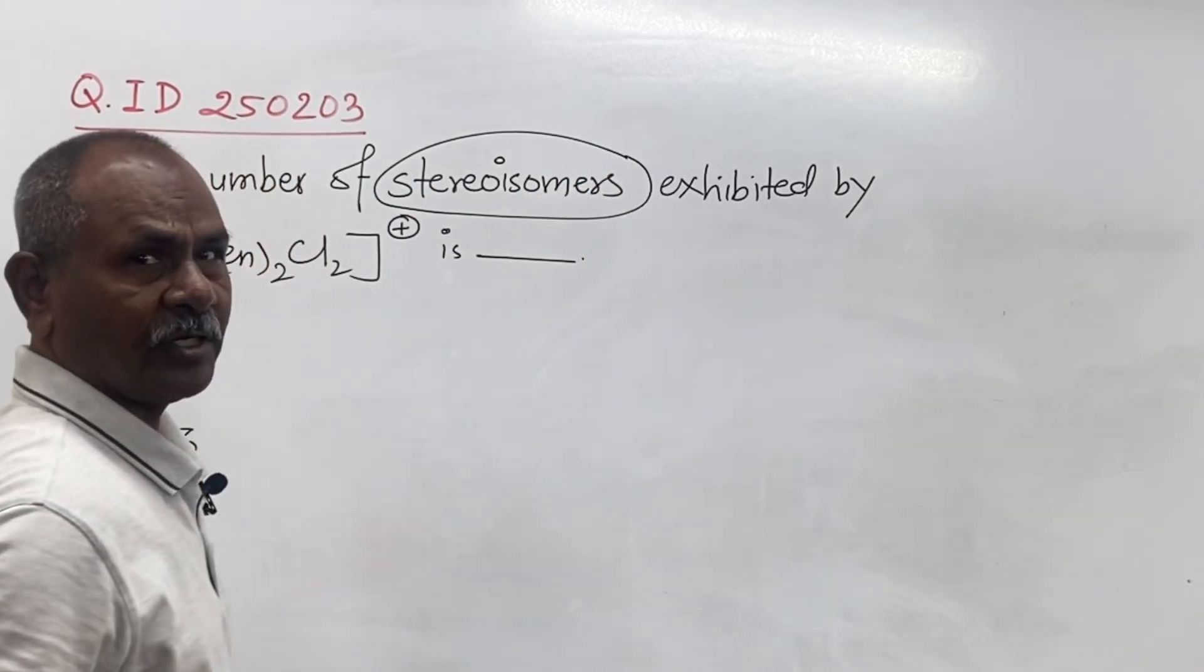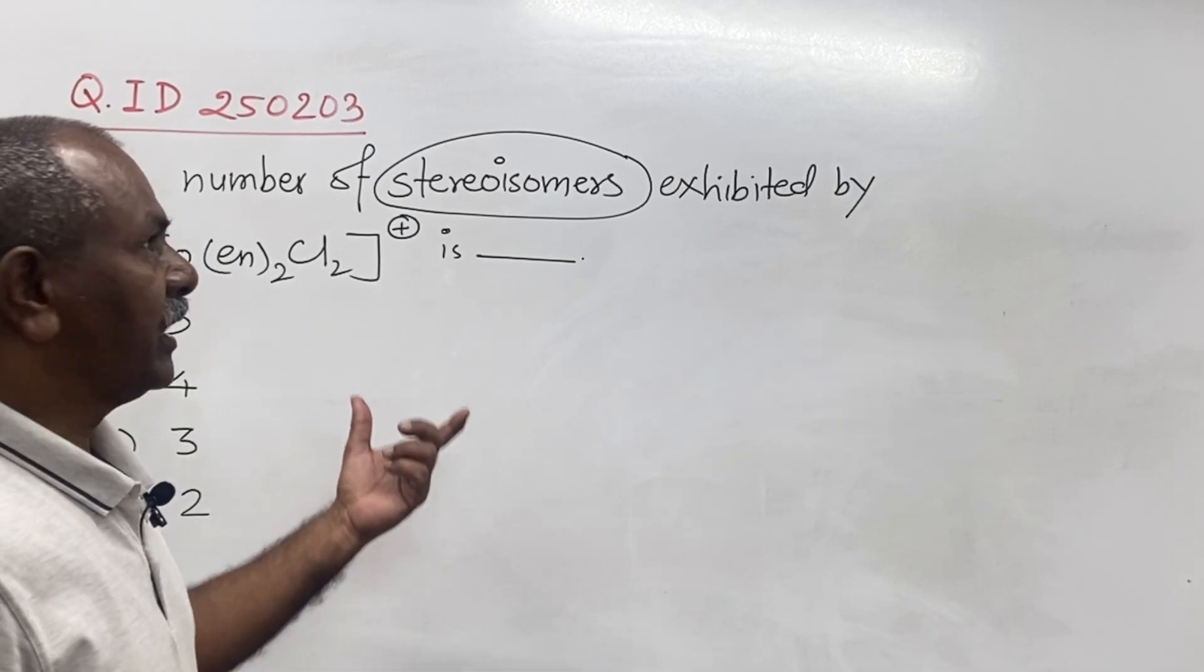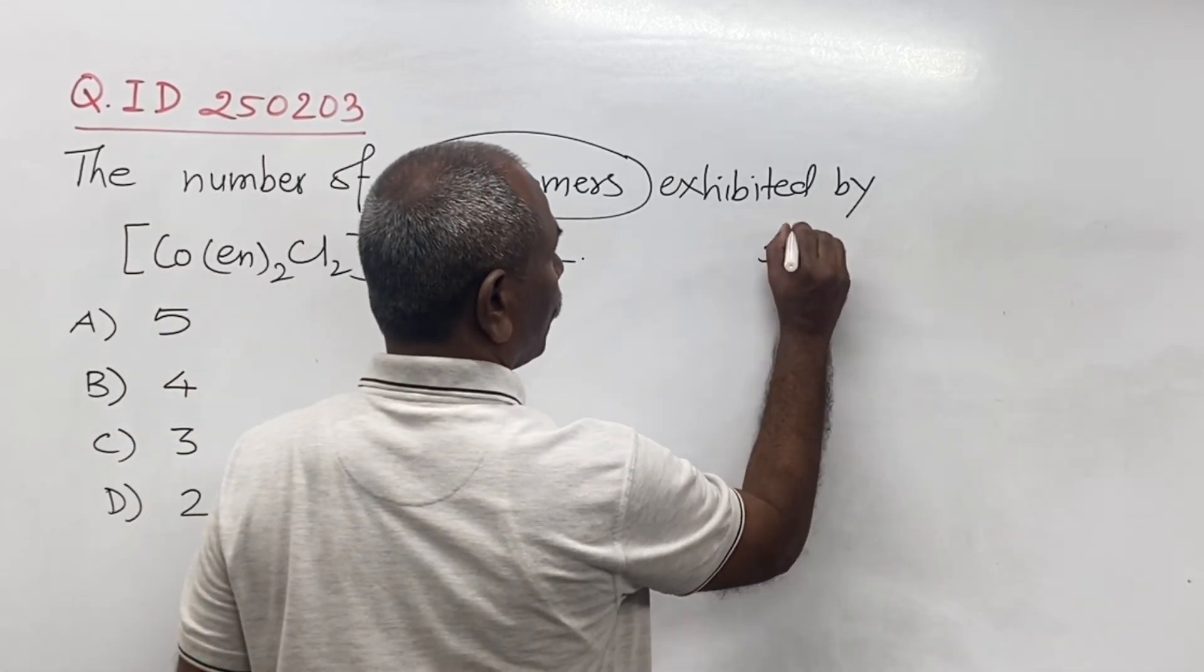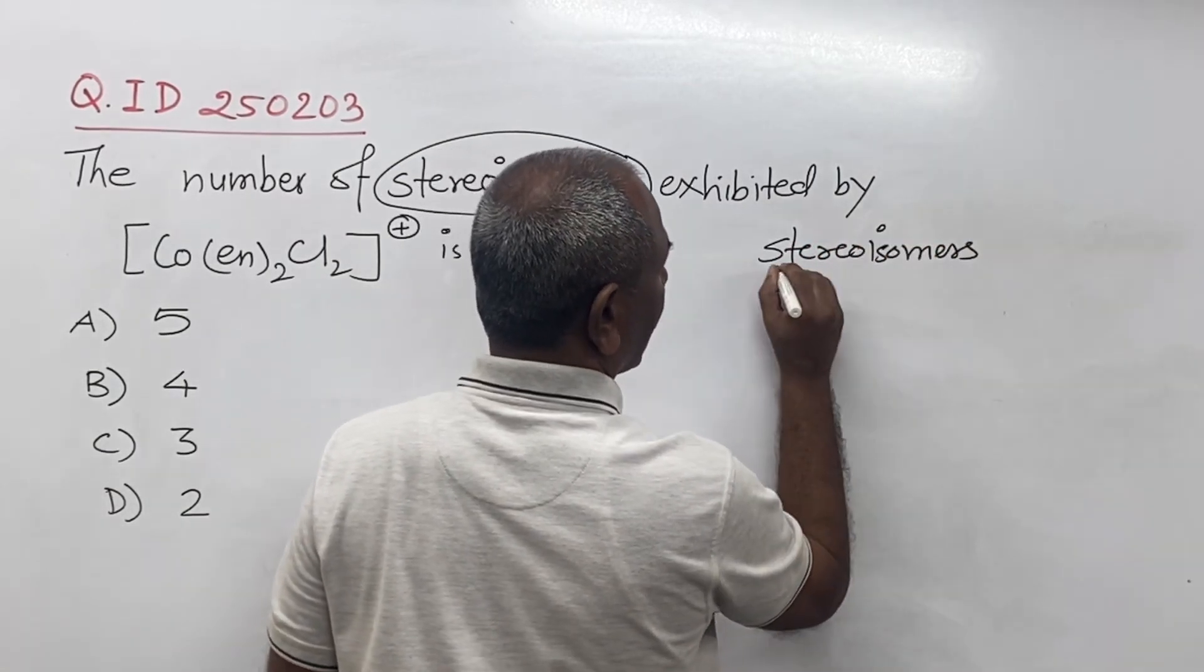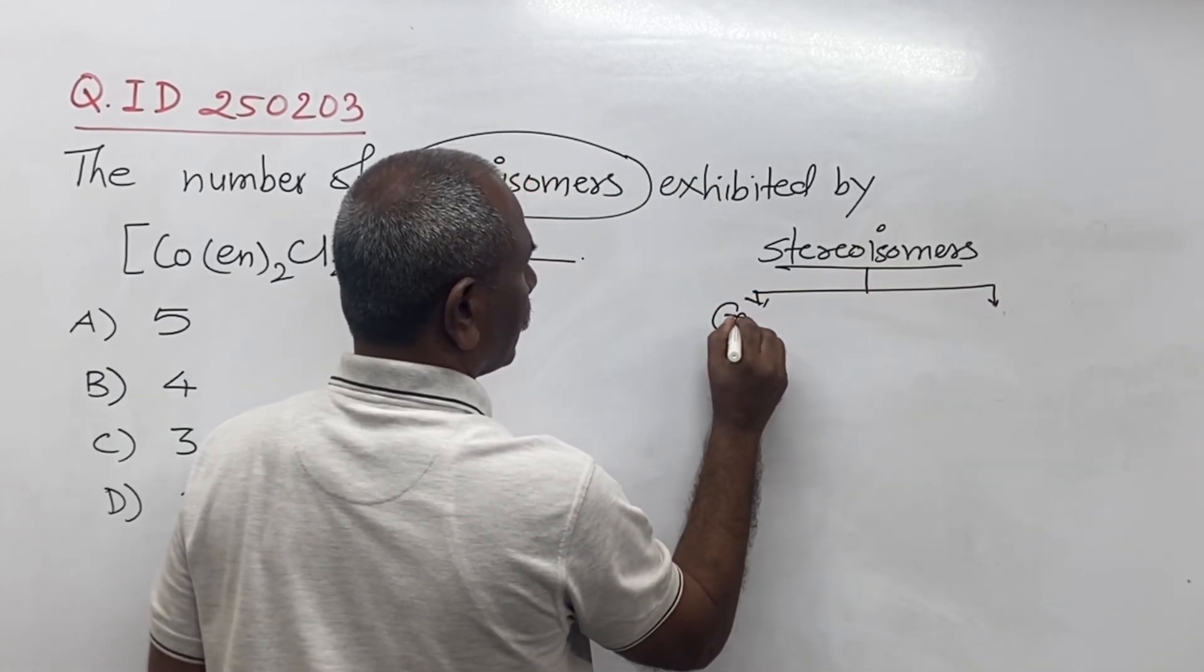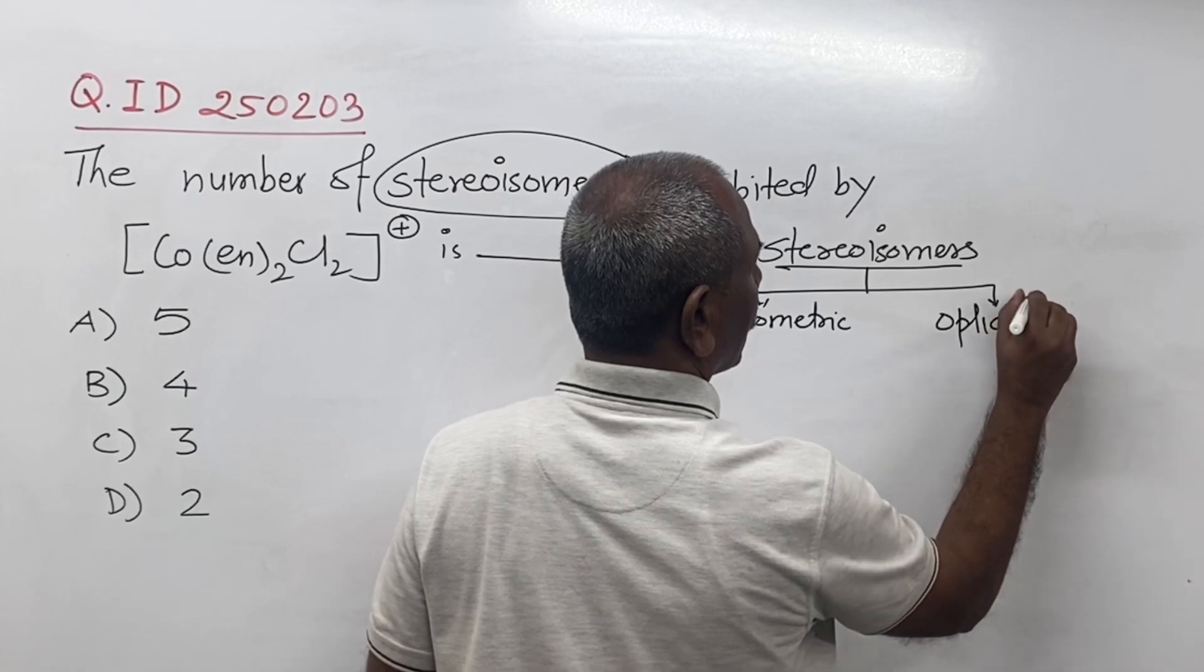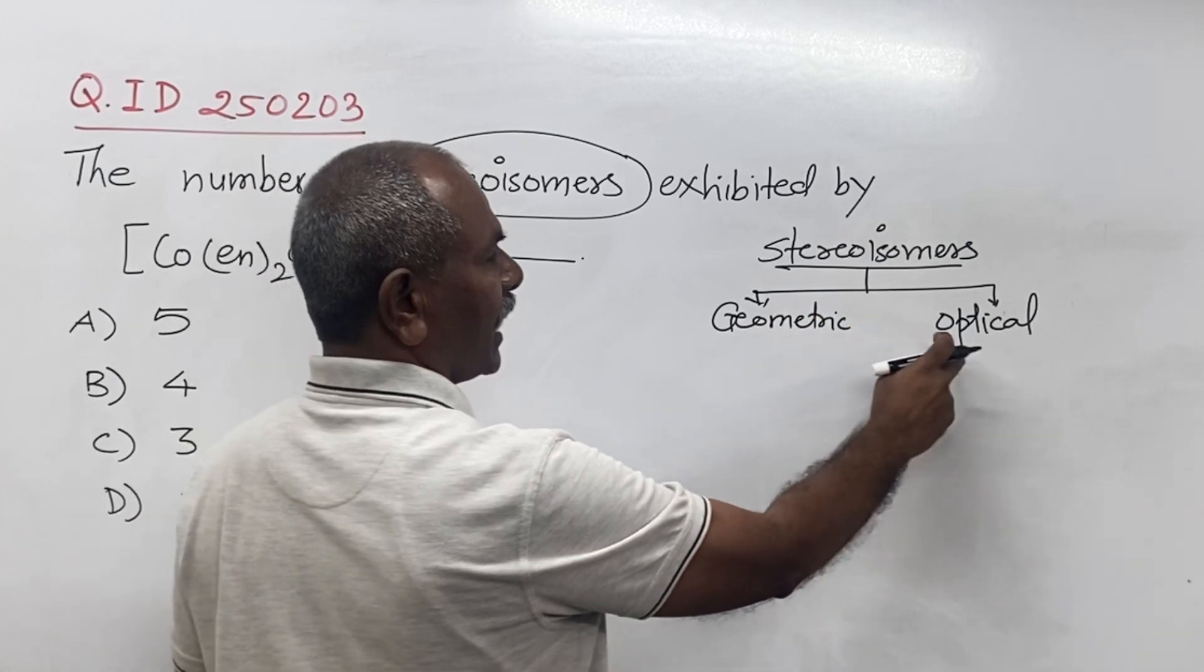Stereoisomerism is the three-dimensional arrangement of atoms in a space. So here the arrangement of atoms in a space is different, and stereoisomers are of two types: one is geometric and second is optical.